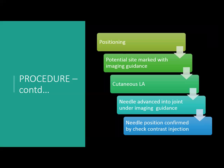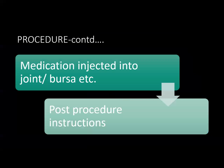After informed consent and pre-procedure pain level recording, the patient is positioned mainly supine or sitting. The target site is marked under imaging guidance. We infiltrate the skin with approximately 1% lidocaine for subcutaneous local anesthesia, then advance the needle into the joint under imaging guidance. Once we are confident of needle position, a contrast injection is done confirming free flow into the joint. After this, a mixture of steroid and local anesthetic in the same syringe is injected, followed by post-procedure instructions.